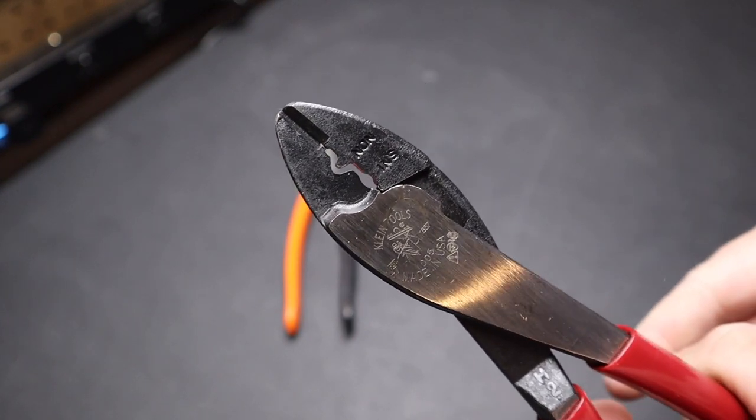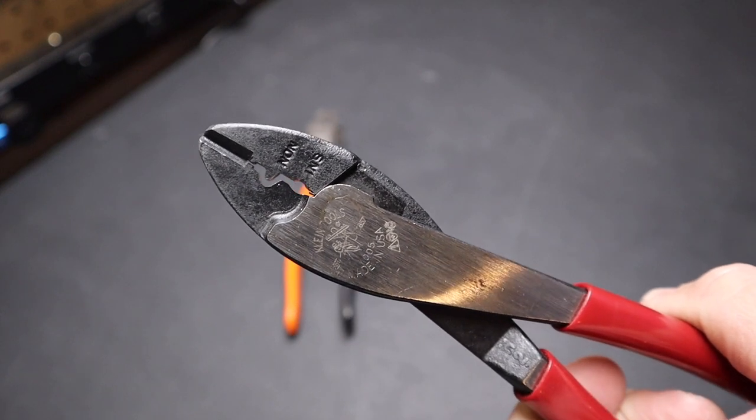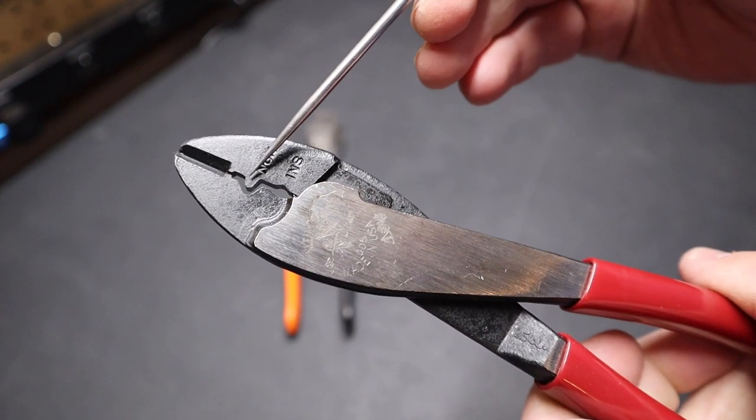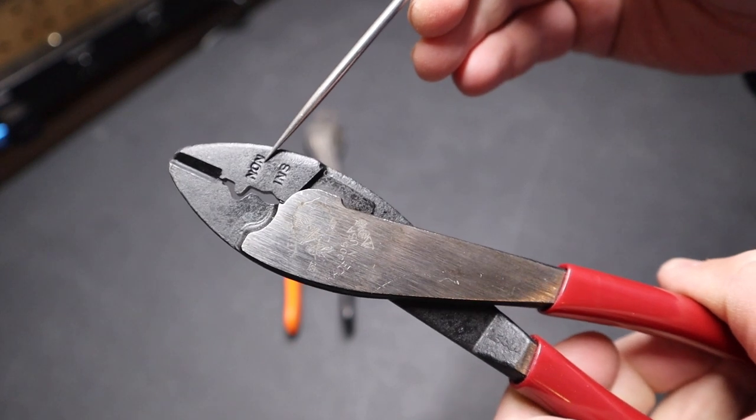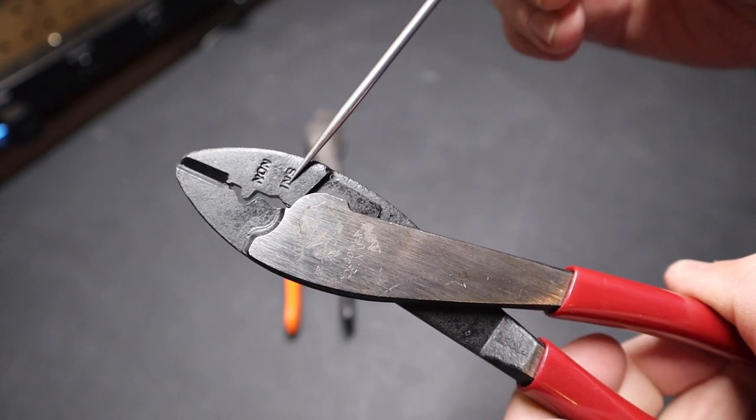But I've updated my thinking on these crimpers based on some experience I've had. If you look at this crimper, you'll see that there's two parts of the die here.